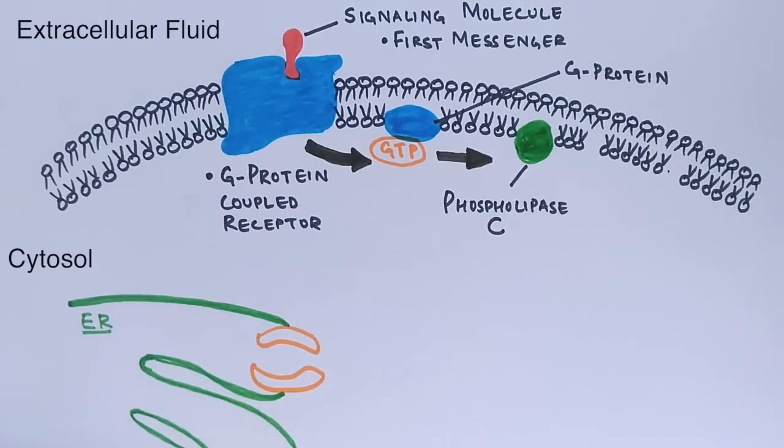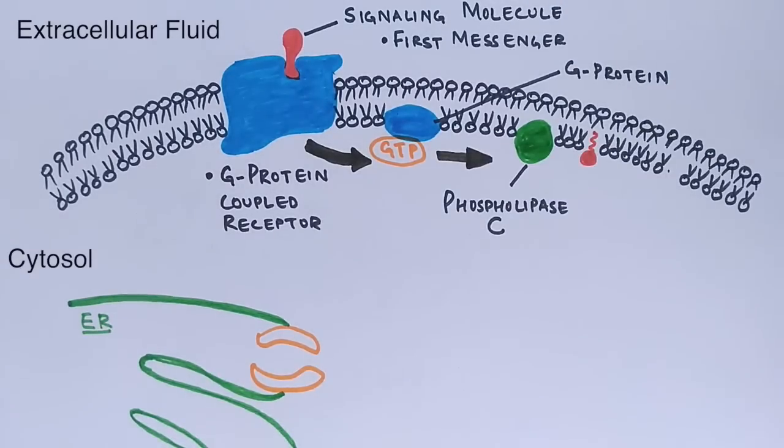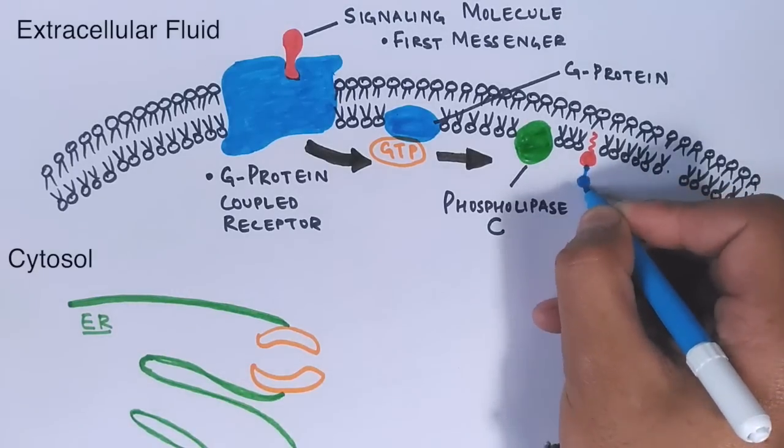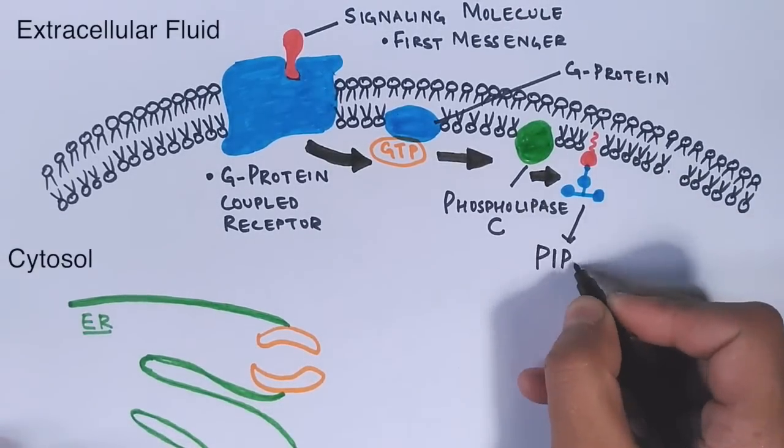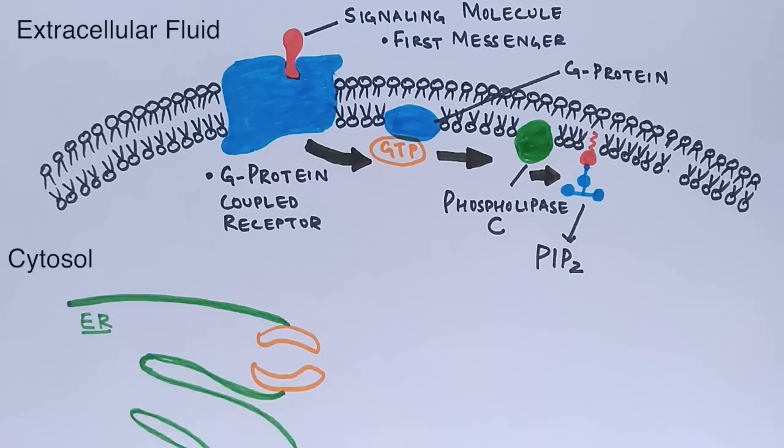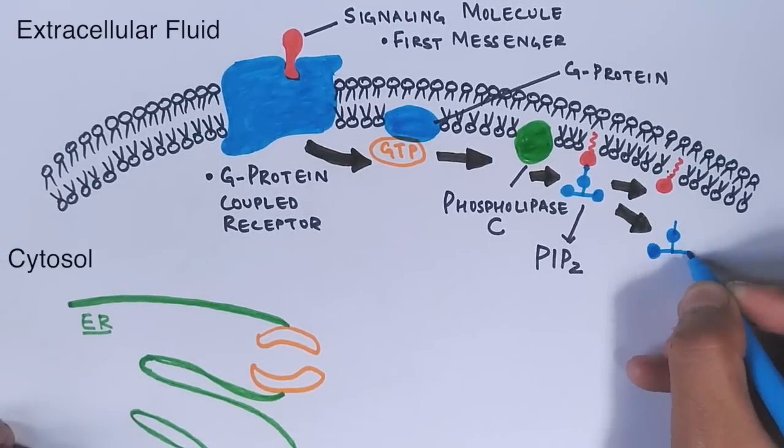Phospholipase C is a class of membrane associated enzymes that cleave phospholipids. Here in that case, it cleaves plasma membrane phospholipid called PIP2, that's phosphatidylinositol-4,5-bisphosphate, and it cleaves it into DAG, that's diacylglycerol, and inositol trisphosphate.